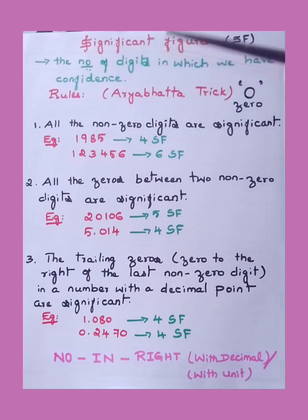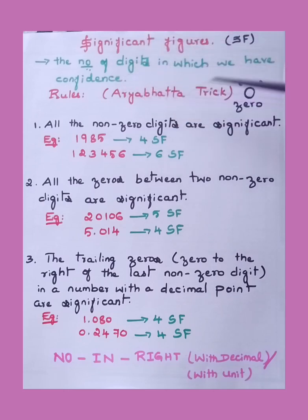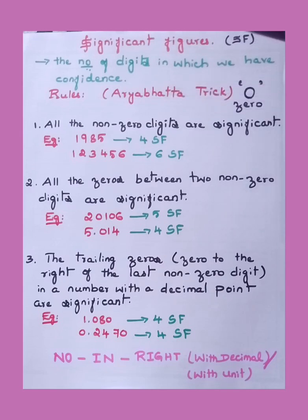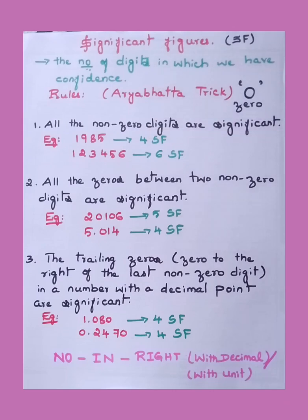Those measurements of quantity, when we measure, are based on three rules. I have given you a trick here — the R8-bata trick. R8-bata is the one who gave us zero, and that value changed the entire calculation thereafter. When he gave this zero, it became immortal. So three golden rules we have to remember are the significant figure rules. Let us check them out one by one.